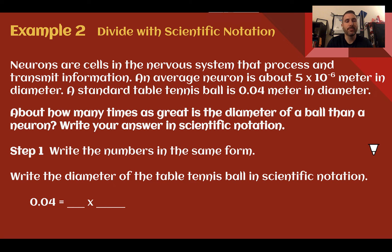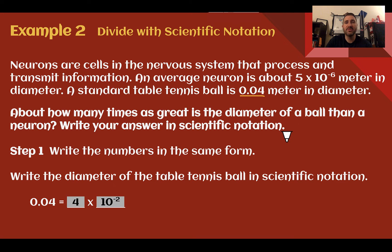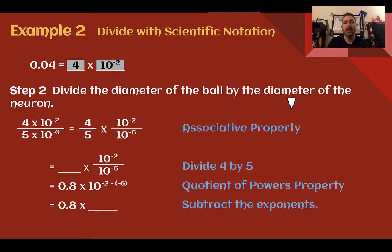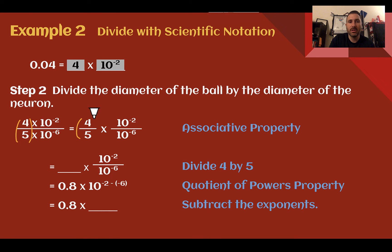Example 2: Divide with scientific notation. Neurons are cells in the nervous system that process and transmit information. An average neuron is about 5 times 10 to the negative 6 meters in diameter. A standard table tennis ball is about 4 hundredths of a meter in diameter. About how many times as great is the diameter of the ball than the neuron? Write your answer in scientific notation. We need to write our numbers in the same format, so 0.04 is 4 times 10 to the negative 2. The phrase 'how many times greater' implies division.